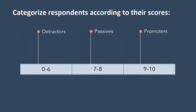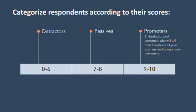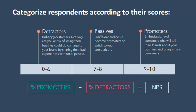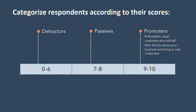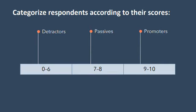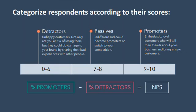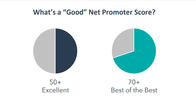Promoters are enthusiastic, loyal customers who will tell their friends about your business and bring in new customers. Passives are indifferent and could become promoters, or they could switch to your competition. Detractors are unhappy customers — not only are you at risk of losing them, but they could do damage to your brand by sharing their bad experiences. Disregard the passives, who represent the middle ground, and subtract the percentage of detractor responses from the percentage of promoter responses. That score is your net promoter score, and can range from negative 100 to 100. Any score above zero can be considered good, since that implies more promoters than detractors. 50 and above is excellent, and 70 and above is the best of the best, although achieving either is both outstanding and rare.